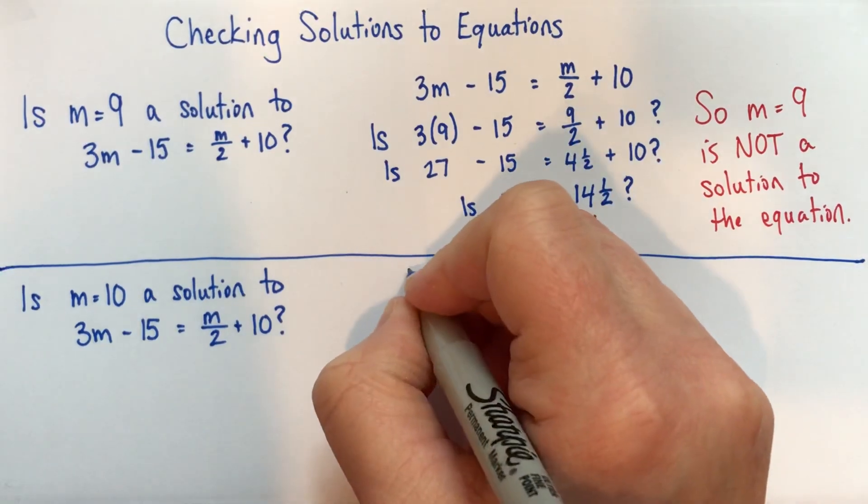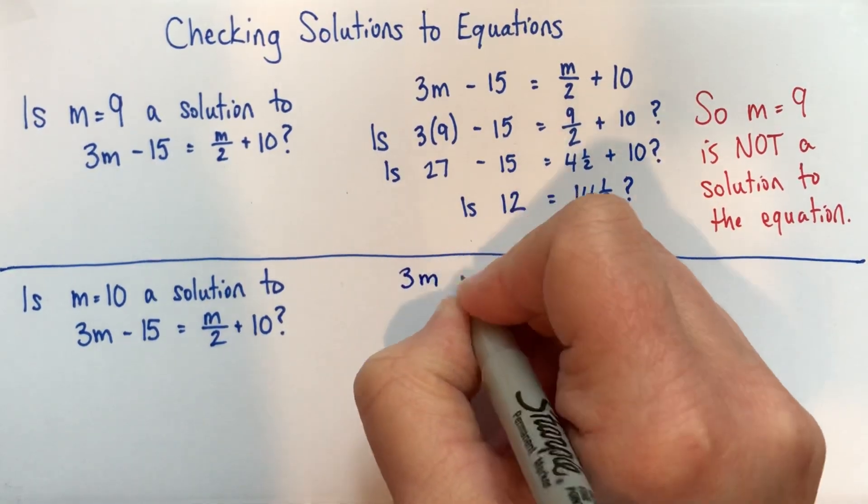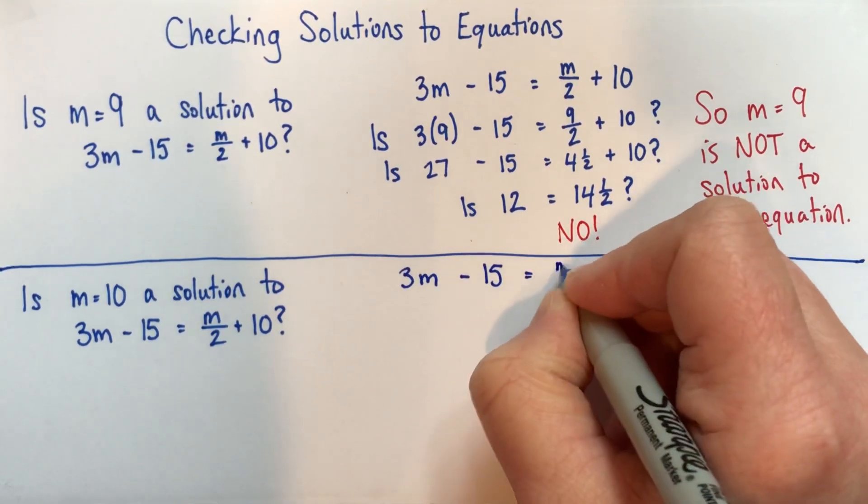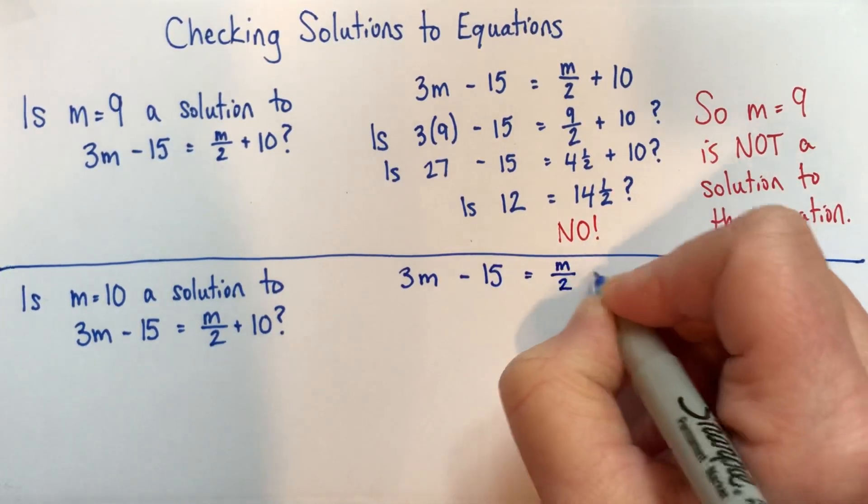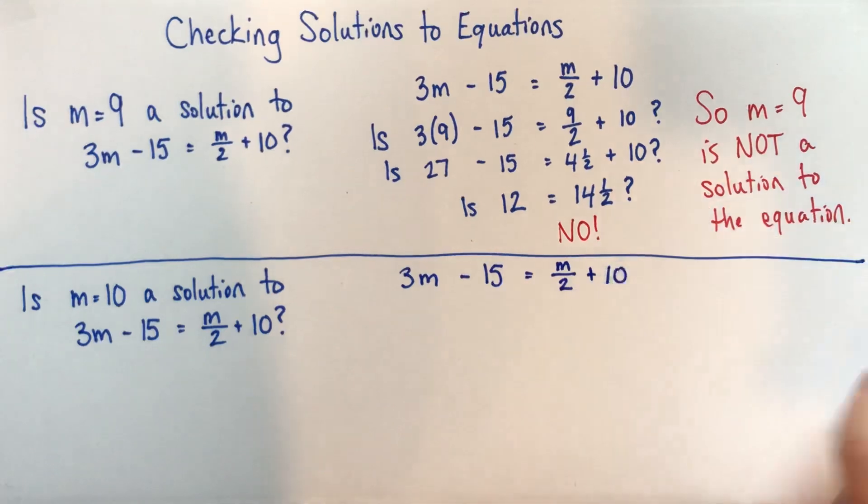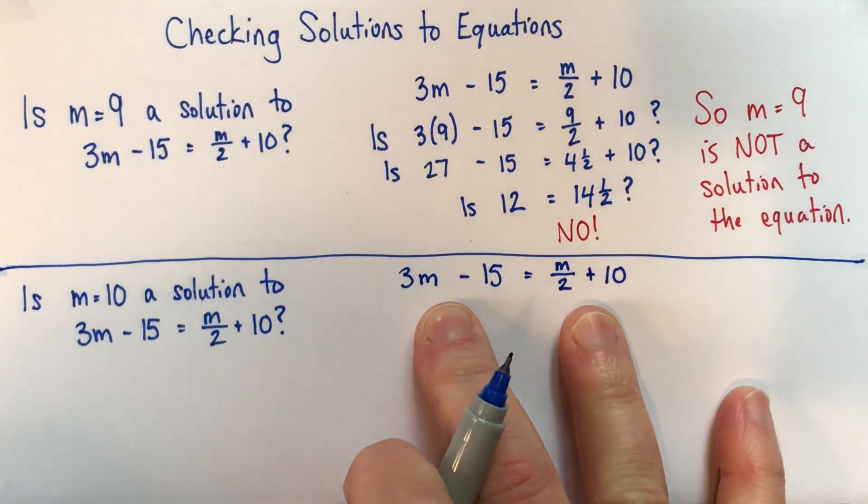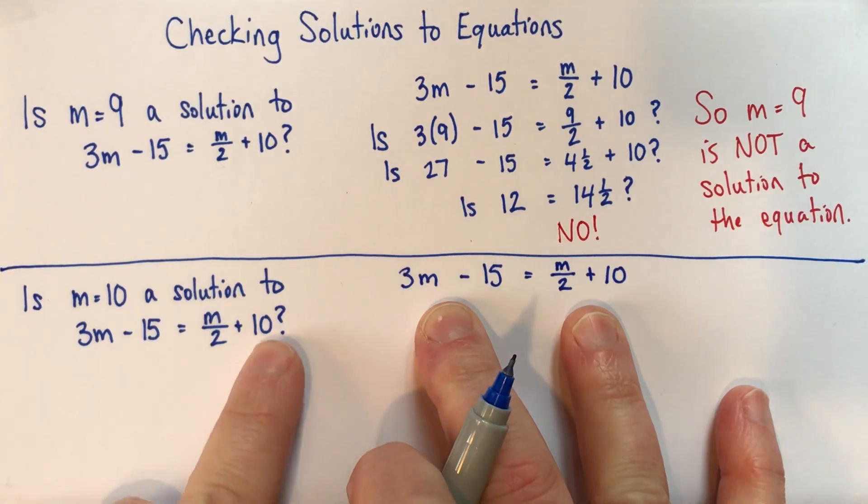So the first one here, and in the very first line where I haven't substituted yet, I don't need to write the is and the question mark, because I'm just copying the equation. I'm saying these two things are the same, and we don't know if they still will be when we substitute 10.